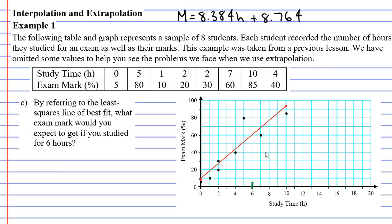is go to the six and make our way to our line of best fit. Work our way across and we can see that we would get a mark of about 60%.